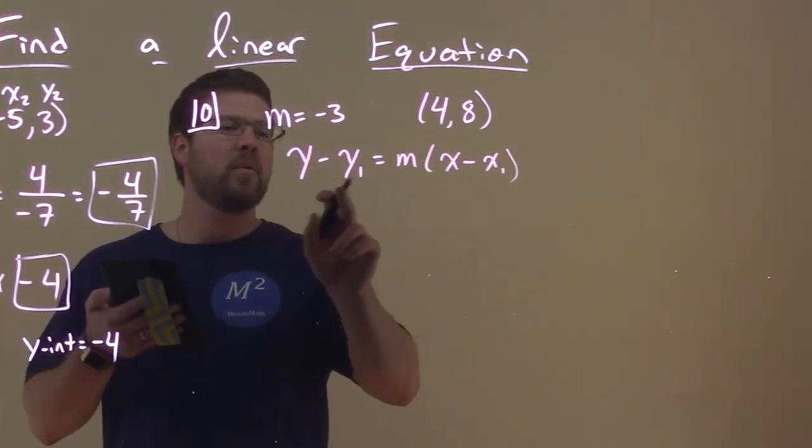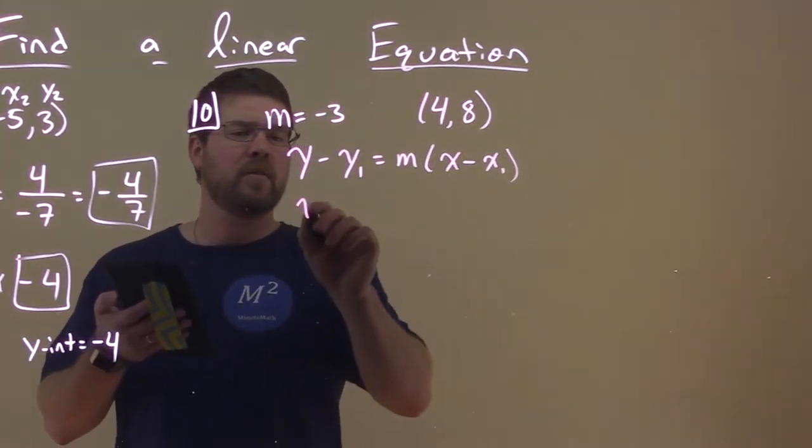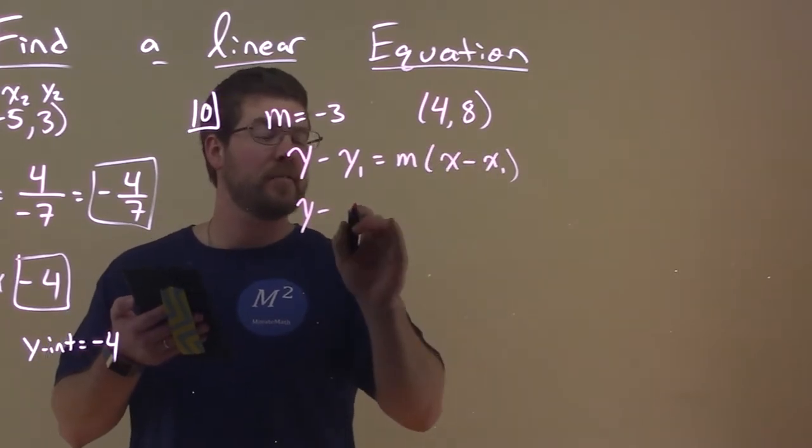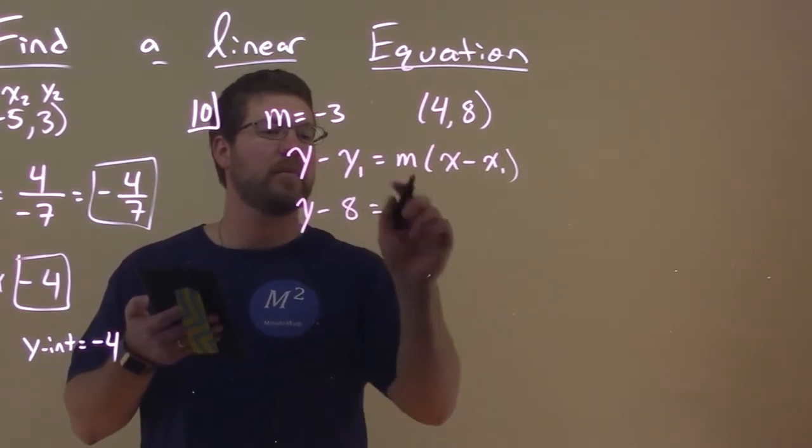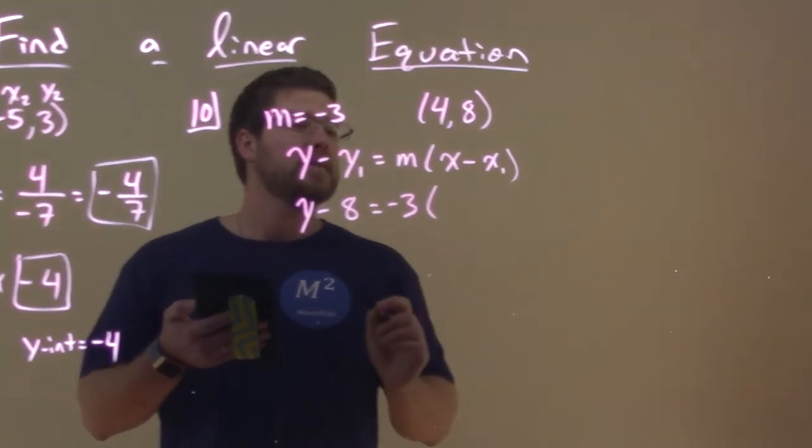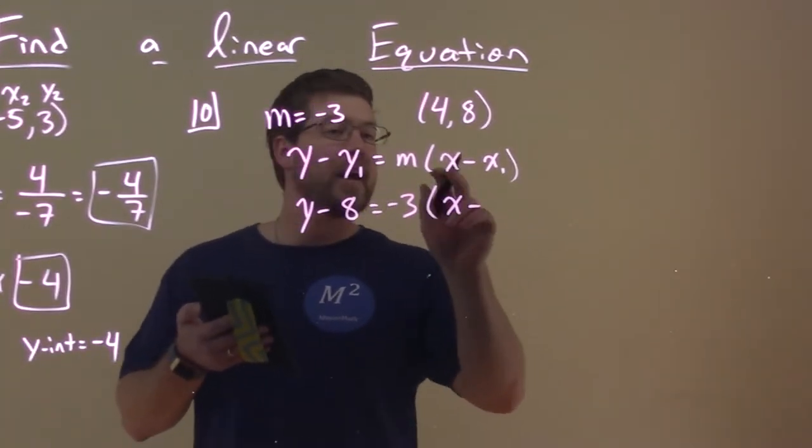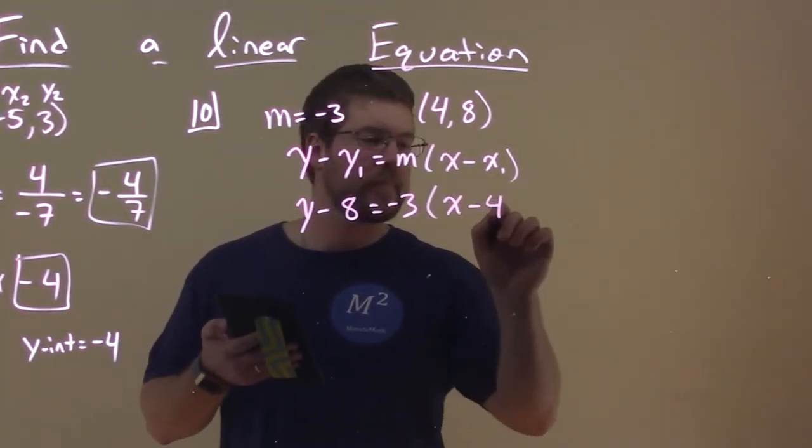So they tell us it's Y minus Y1 equals M times X minus X1. And so, Y1 is this 8 value, so we have Y minus the Y value given to us at that point, 8, equals my slope, negative 3, times X minus X1, 4.